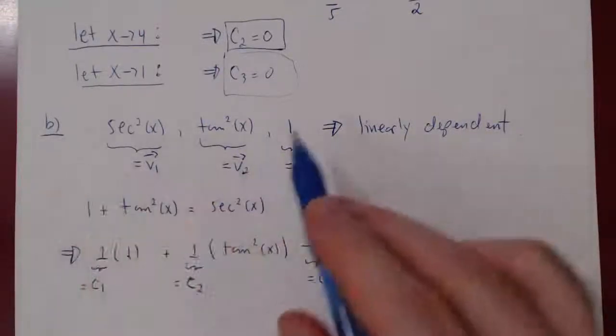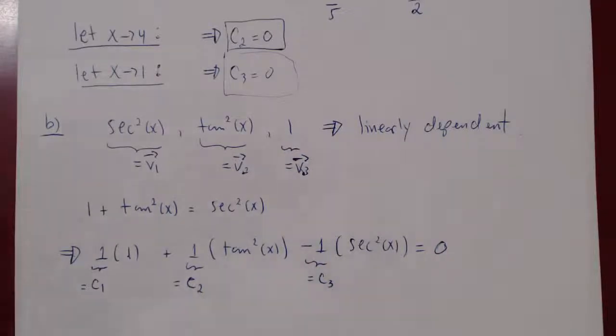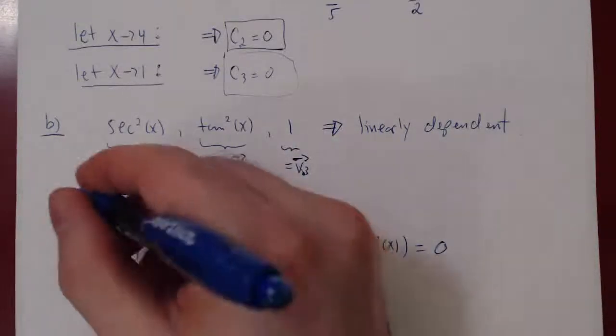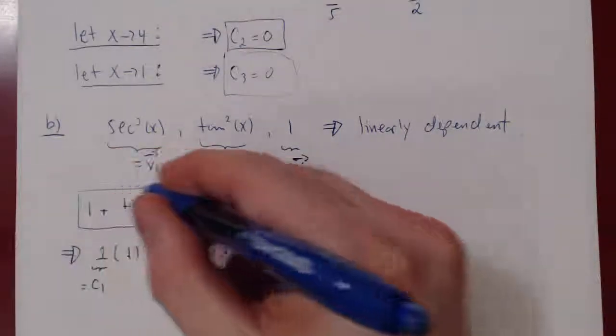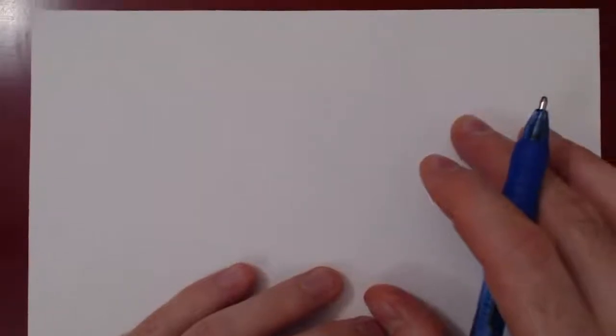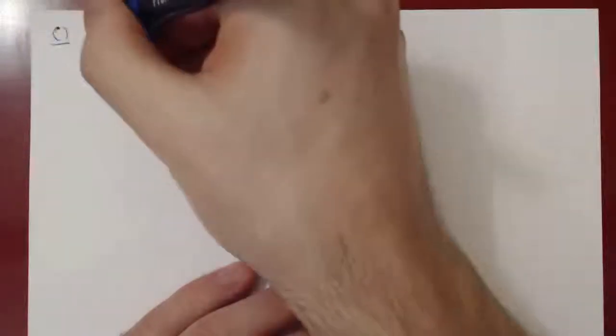The key idea was to use the result that vectors are linearly dependent if and only if at least one is a linear combination of the others — implying some relation between them. Here it was the well-known relation between 1, tan²x, and sec²x. Now let's do one last example, considering three functions: y = x, y = ln(x), and y = eˣ. Are these three functions linearly independent or dependent?